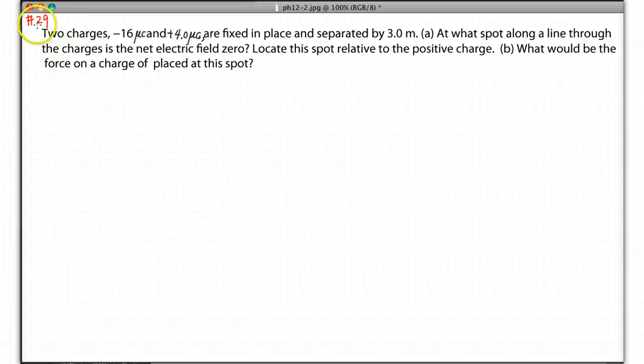Okay, let's look at question number 29 in the textbook. Two charges: one is negative 16 microCoulombs and the positive 4 microCoulombs. They are fixed in place and separated by 3 meters.